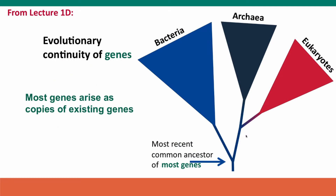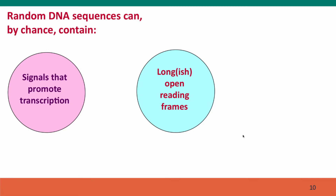Not all genes arise as copies of existing genes. We're realizing more than we used to that genes can also arise from sequences that weren't genes at all — they can arise from the junk DNA in our genomes. Here's how this happens: we know that random sequences can just by chance contain two kinds of things that are very important for the formation of new genes. They can contain signals — combinations of bases that function to promote transcription.